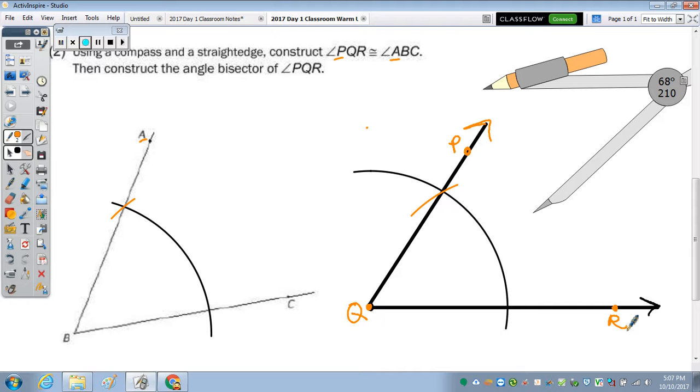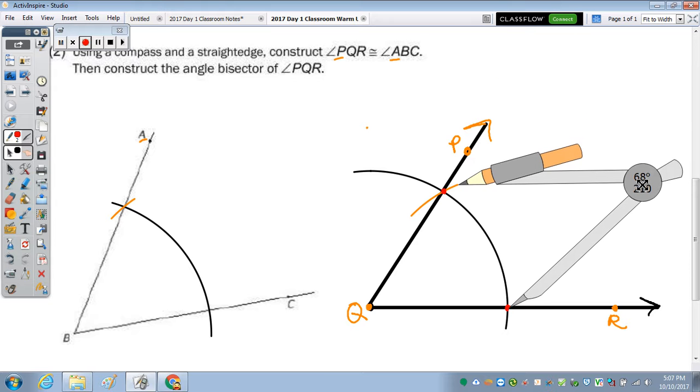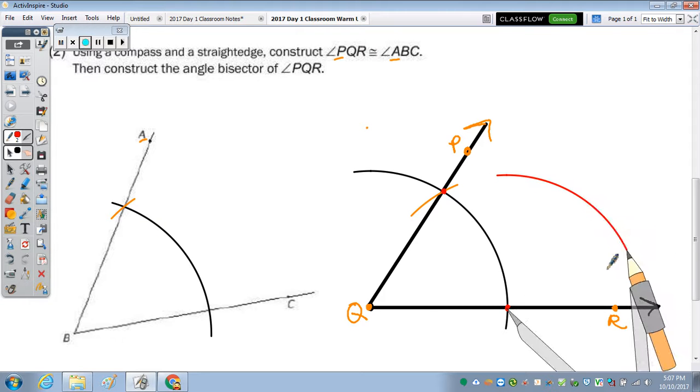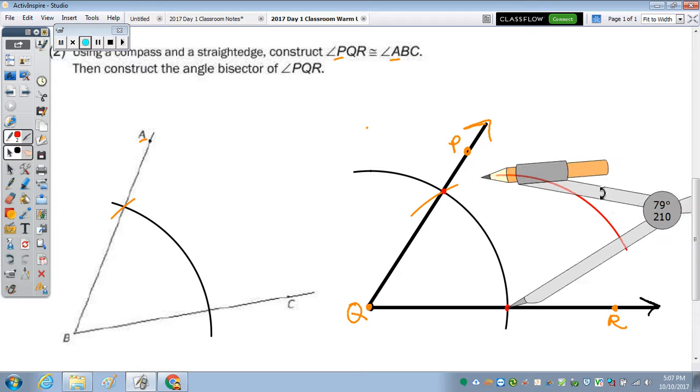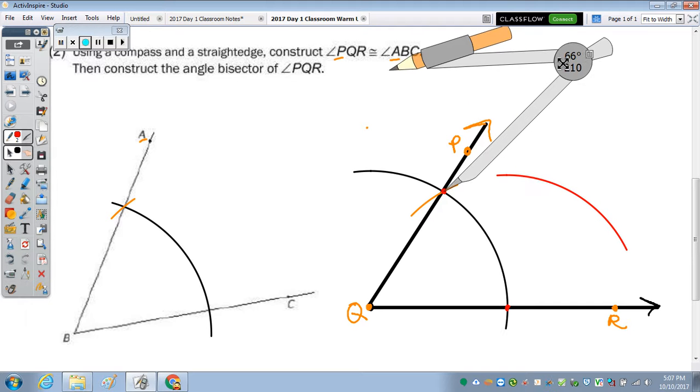Now we need to bisect it. So I'm going to use the arc that's already there, instead of drawing another one. And these are the two points where you put the compass, and then make the X, just outside. So I'm going to bring it here, make an arc. I'm going to put it here, and make the arc.